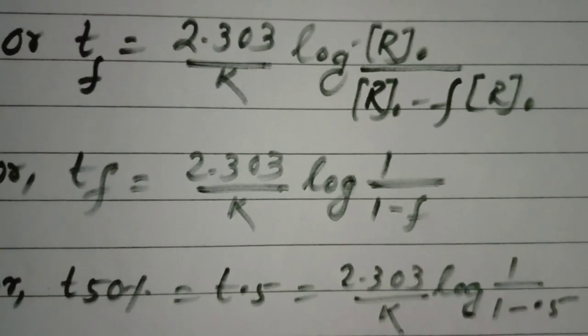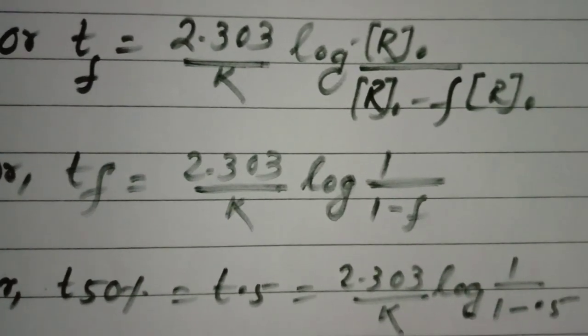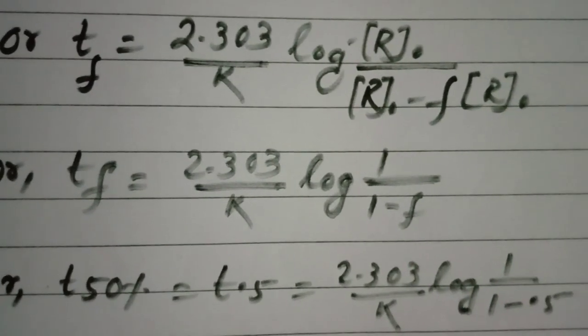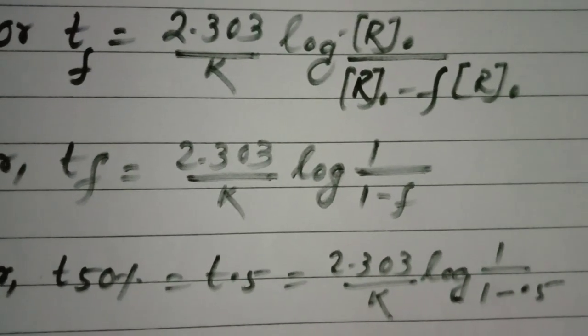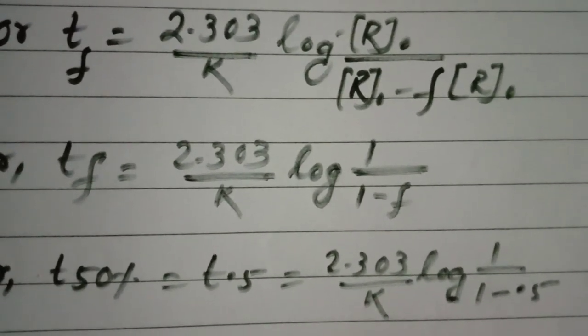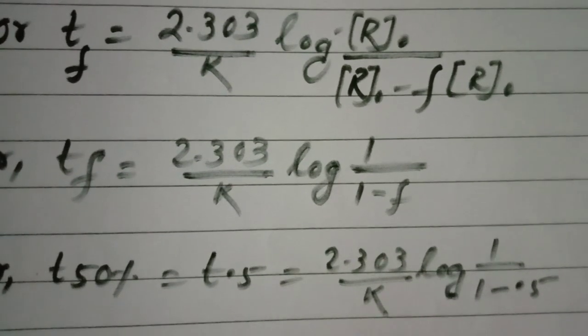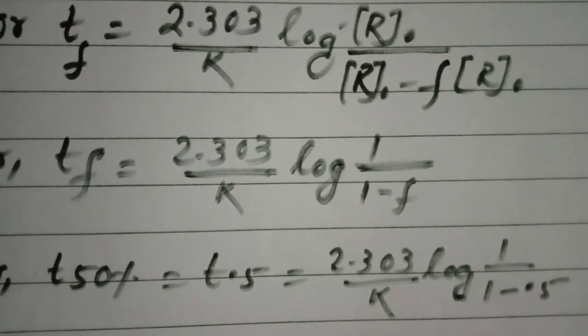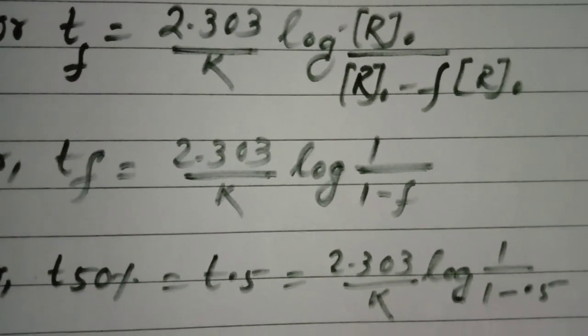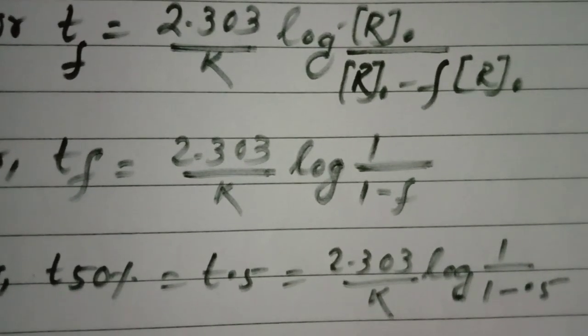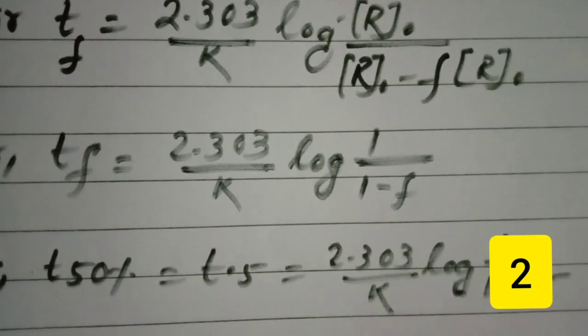At t half, or t fifty percent, t point five, the equation becomes 2.303 by k log 1 by 1 minus 0.5. 1 by 1 minus 0.5 is found to be 2. So t point five, or t half, is equal to 2.303 by k log 2.